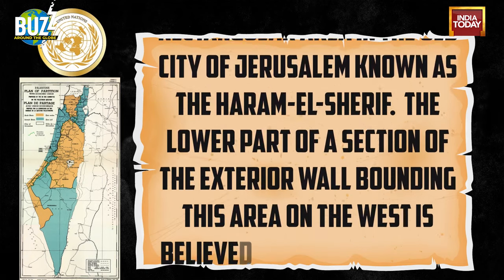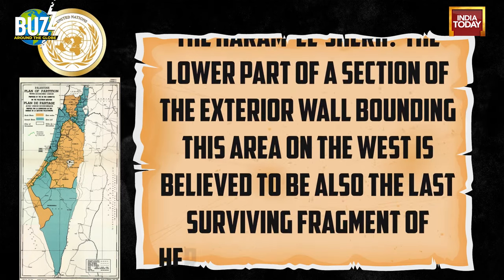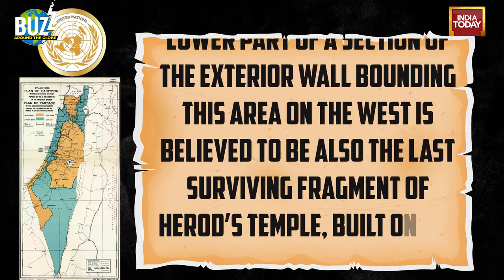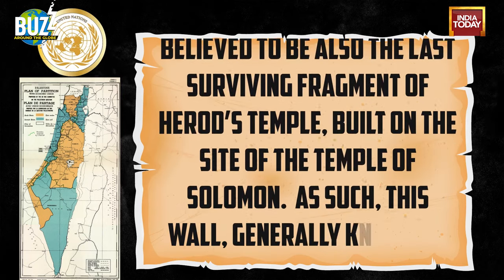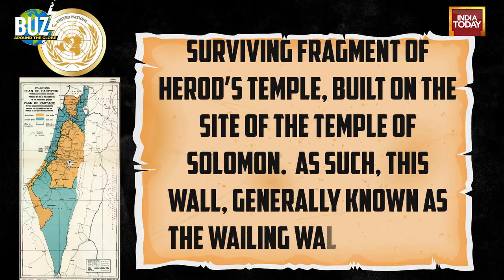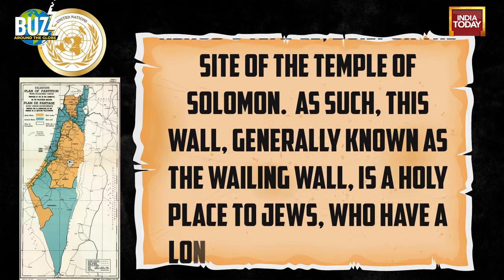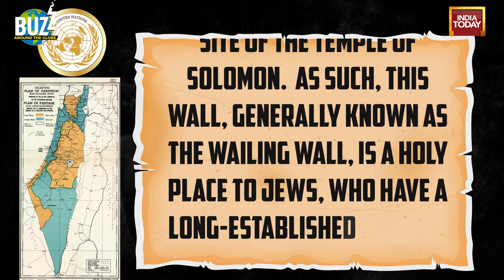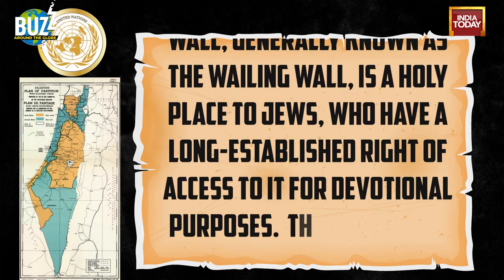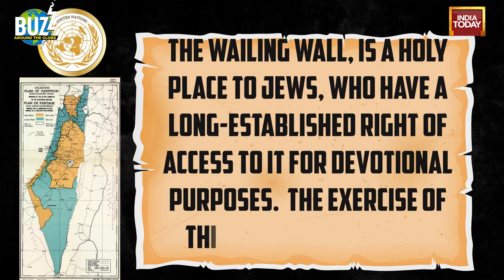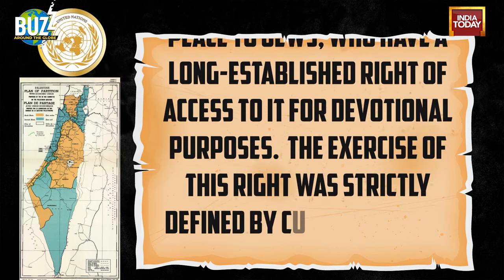The lower part of a section of the exterior wall bounding this area on the west is believed to be also the last surviving fragment of Herod's temple, built on the site of the Temple of Solomon. As such, this wall, generally known as the Wailing Wall, is a holy place to Jews, who have a long-established right of access to it for devotional purposes.